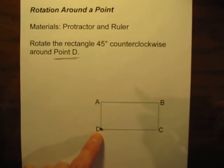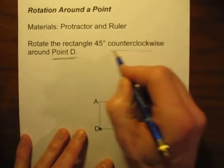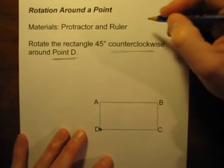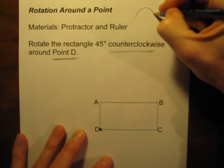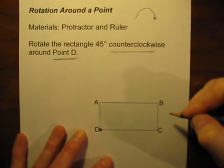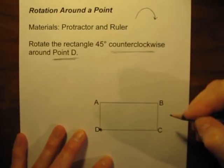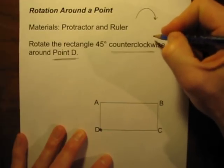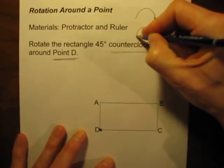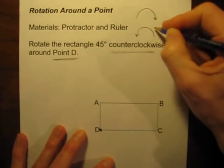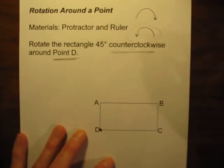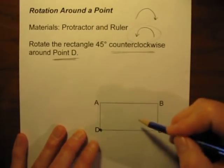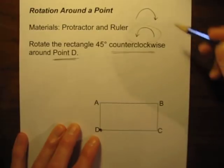Two other things you need to know: which direction are you going to be rotating? In this example, we're going to be going counterclockwise. A clockwise rotation goes just like the hands of a clock. But a counterclockwise rotation is going the opposite of the hands of a clock. So this counterclockwise rotation is the kind we'll be doing today.